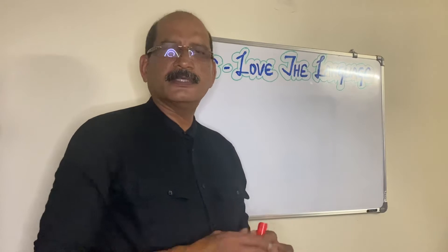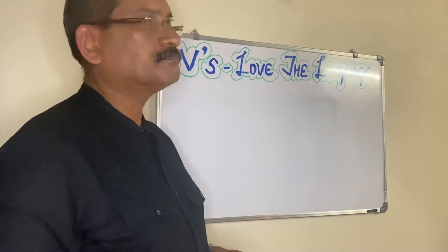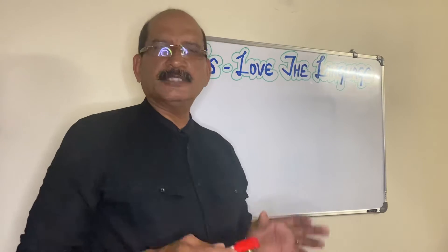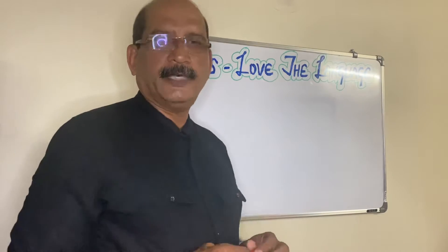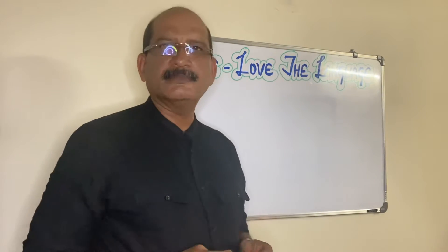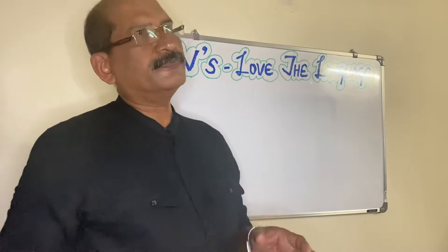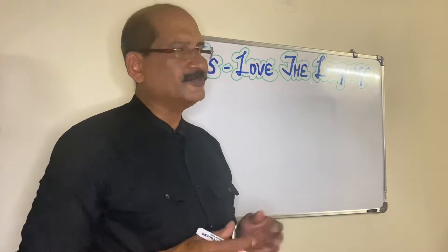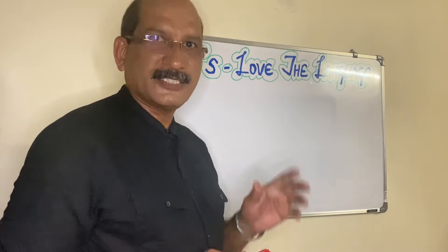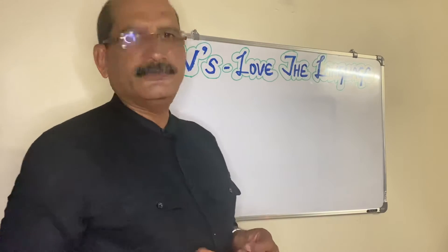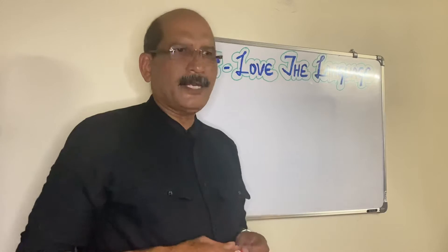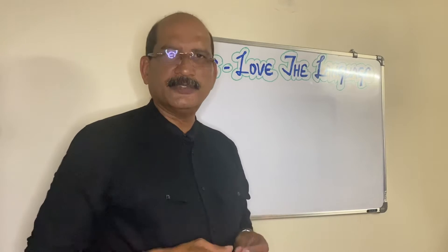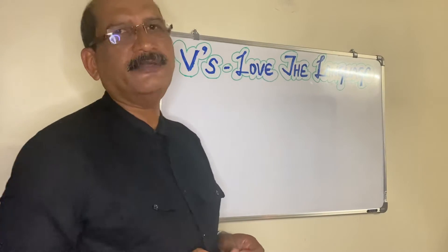Adverb of frequency always comes before the main verb of the sentence. Adverb of frequency — the words you will find in adverb of frequency — are always similar to adverbs of time. But the main difference is: adverbs of time come either at the beginning or at the end of the sentence, while adverb of frequency comes before the main verb of the sentence.